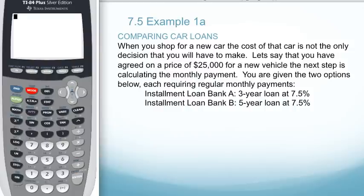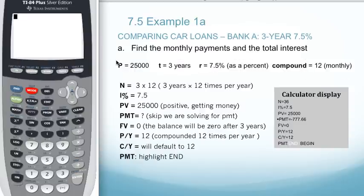The first option is a 3-year, 7.5% loan. The other is a 5-year, 7.5% loan. Let's look at the first loan from Bank A, the 3-year, 7.5% loan, and calculate the monthly payment and the total interest using the TVM solver.